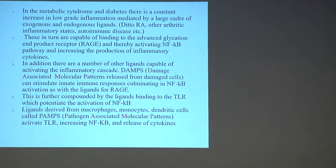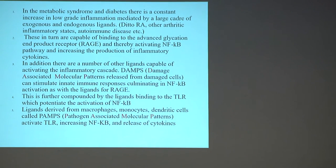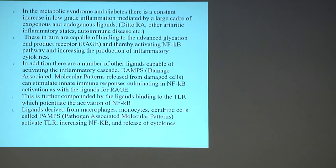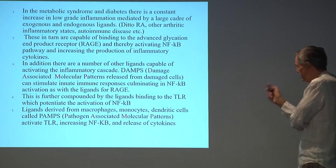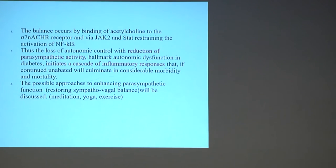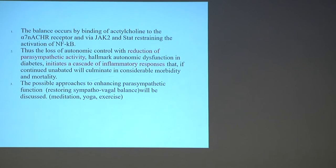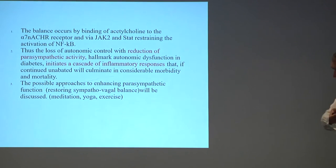The advanced glycation end product receptor is part of this system. DAMPs — damage-associated molecular patterns released from damaged cells — can stimulate the immune system. Ligands derived from monocytes, macrophages, and dendritic cells called pathogen-associated molecular patterns activate toll-like receptors, increasing cytokines and inflammatory mediators. Loss of autonomic control with reduction in parasympathetic activity is the hallmark of autonomic dysfunction in diabetes and initiates a cascade of inflammatory response. Autonomic neuropathy is associated with not only increased sympathetic activity but decreased parasympathetic activity.